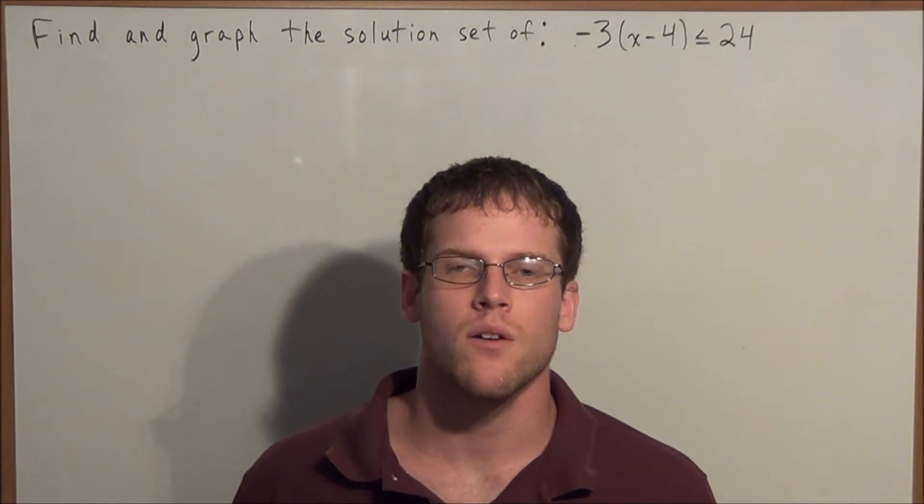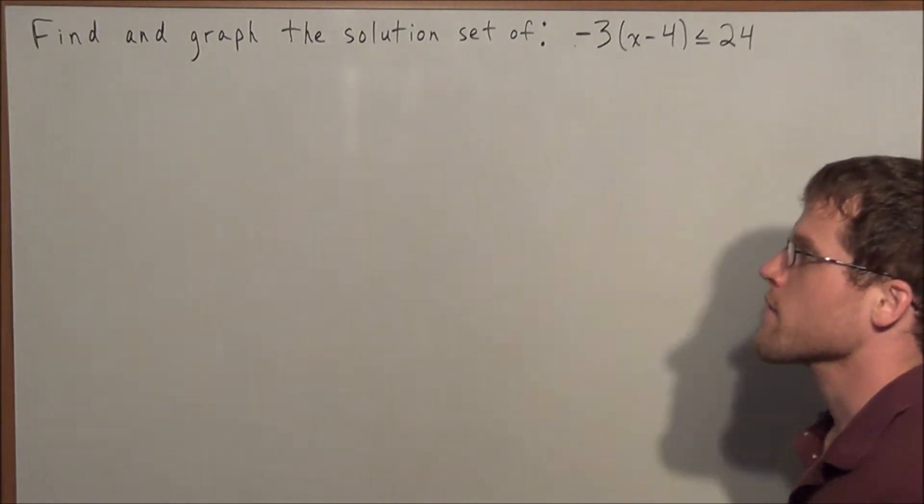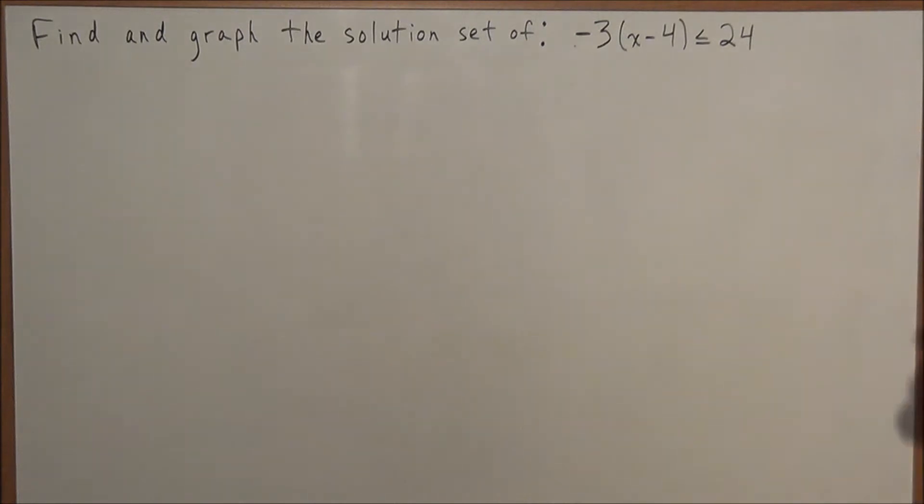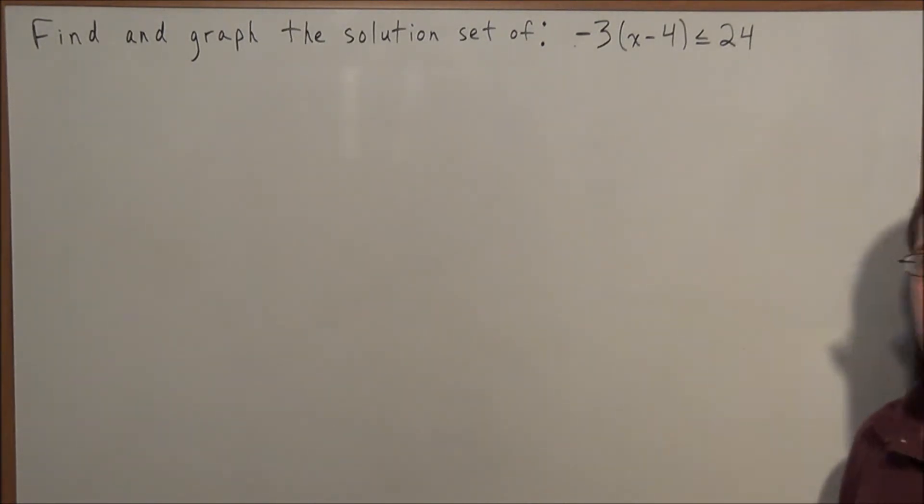Hi, my name is Vincent, and today I want to take a look at graphing linear inequalities in one variable. So we have the problem find and graph the solution set of -3(x - 4) ≤ 24.